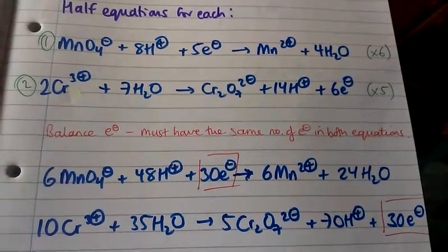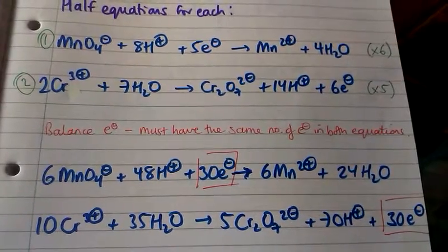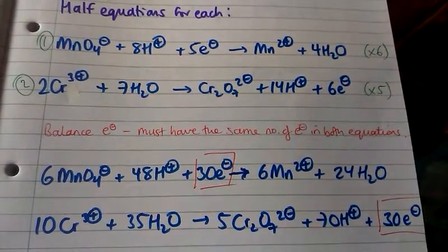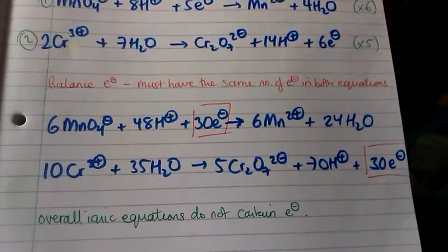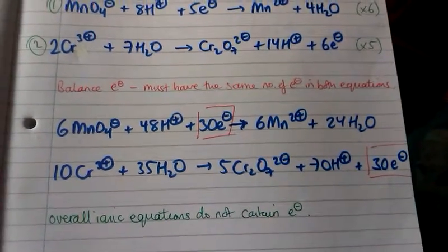Now that we've got the same number of electrons in both, they now cancel each other out and we can add them together. The reason we do this is because overall ionic equations do not contain electrons, so if we cancel out 30 electrons in both equations,